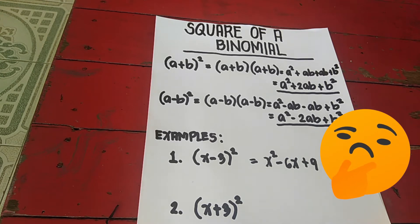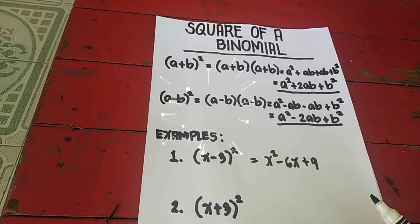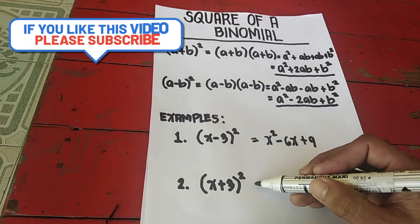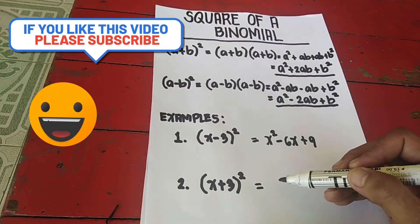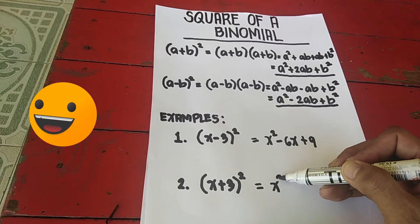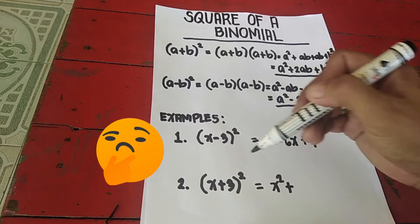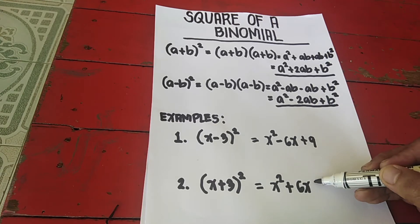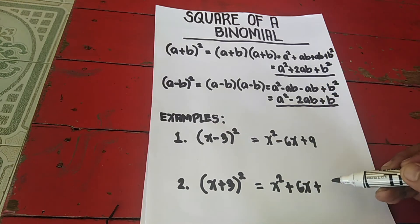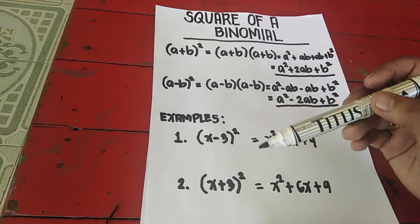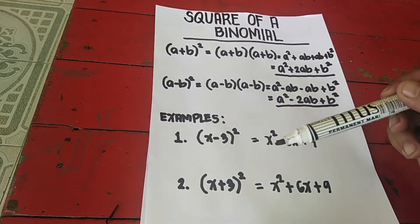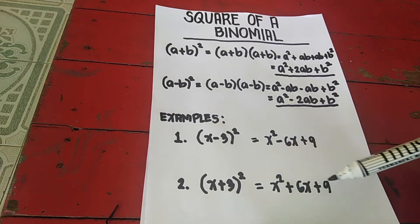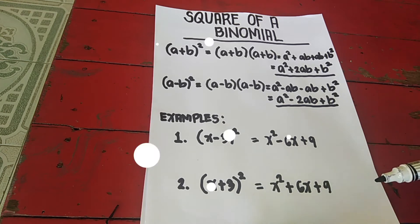Let's proceed to the second example: (x + 3) squared. First, square x to get x squared — the sign is positive. Multiply x times 3 to get 3x, times the constant 2, so that is 6x. Then square the last term — 3 squared is 9. So the answer is x squared plus 6x plus 9.